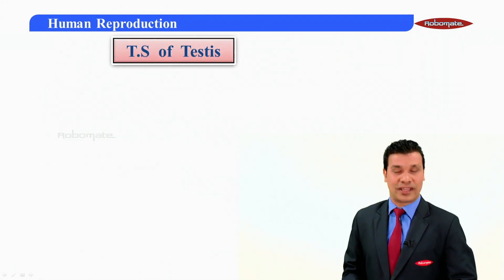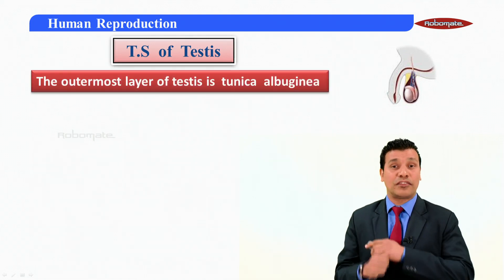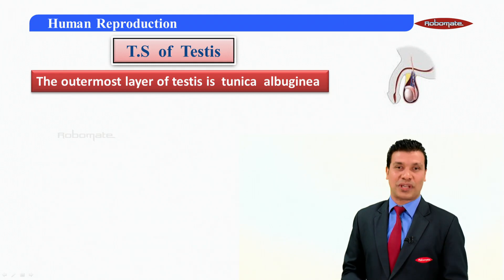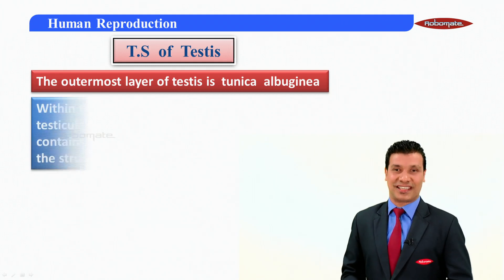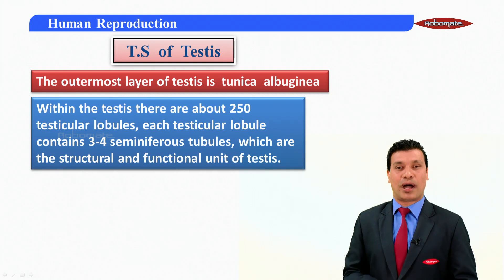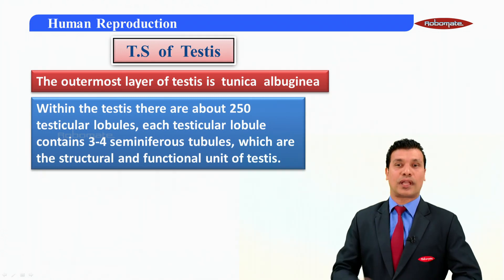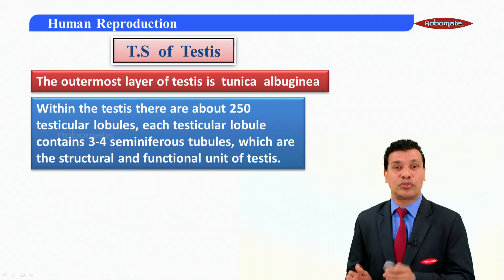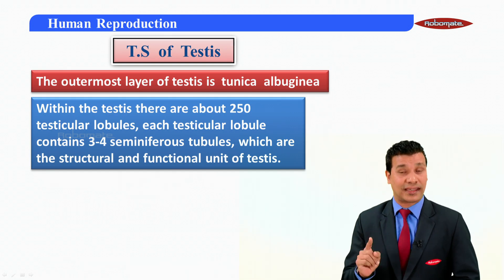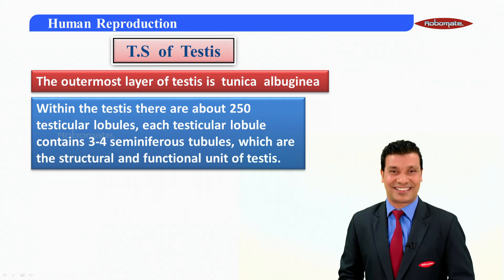Transverse section of testes. The transverse section of testes reveals the outermost layer which is known as the tunica albuginea. Within the testes there are about 250 testicular lobules. Each testicular lobule contains three to four seminiferous tubules, which are regarded as the structural and the functional unit of the testes.